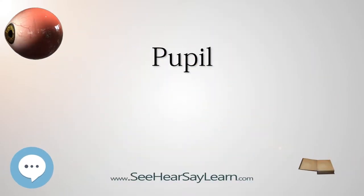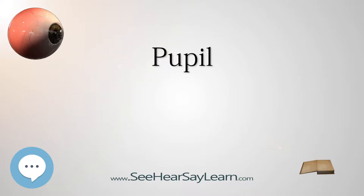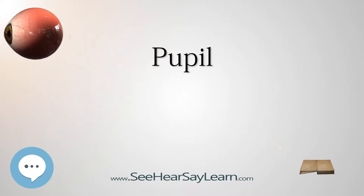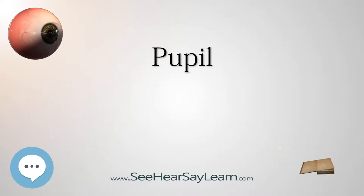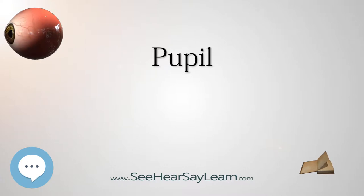The pupil is a hole located in the center of the iris of the eye that allows light to strike the retina. It appears black because light rays entering the pupil are either absorbed by the tissues inside the eye directly, or absorbed after diffuse reflections within the eye that mostly miss exiting the narrow pupil.